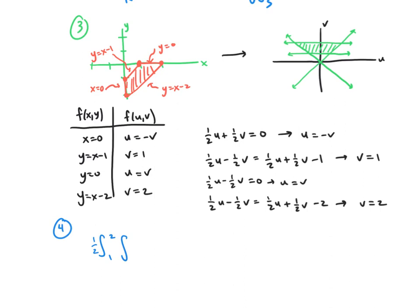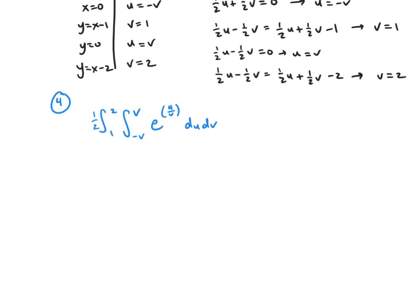And then our inside integral, again, similar to that last example. We got left function, u = -v, and then right function, u = v. So the lower limit is -v. The upper limit is positive v. Then we have e^(u/v). And we're going to do du, dv.